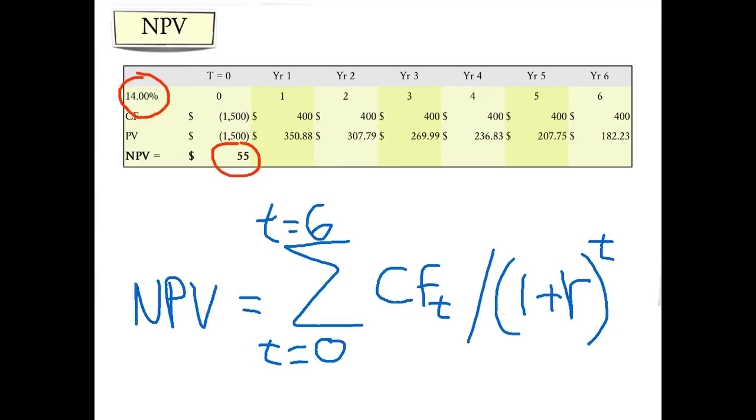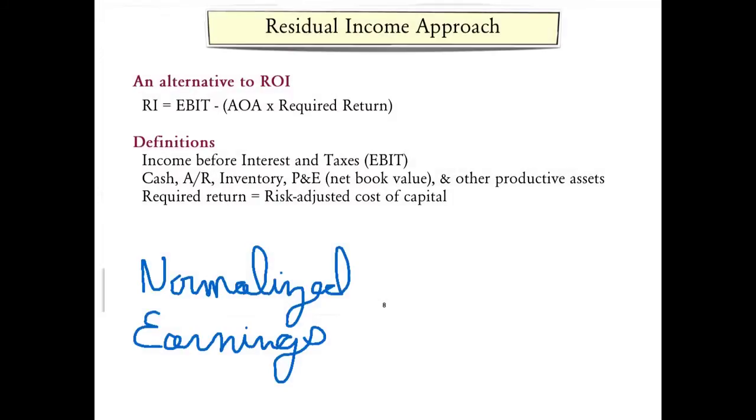As you can see, this example was really cooked up to show that while ROI can be a useful measure of performance, it may be dysfunctional in that if managers focus on ROI, they may choose to not undertake positive NPV projects. An alternative to ROI calculations are residual income calculations, defined as earnings before interest and taxes minus average operating assets times the required return.